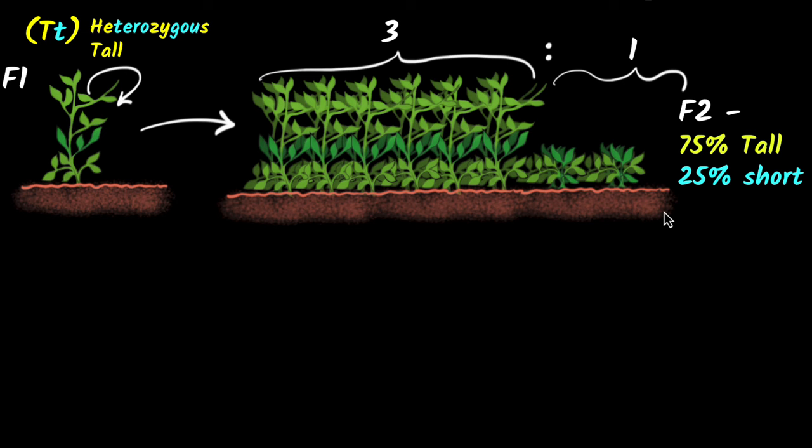But again, why is this happening? To answer this question, Mendel came up with the second law called the law of segregation. In other words, separation. What does that mean?